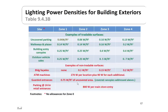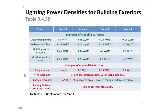The bottom half of the chart shows examples of non-tradable surfaces. ATMs are allowed 270 watts per location plus another 90 watts for each additional ATM machine. Guarded entrances are allowed 0.75 watts per square foot of uncovered areas. Parking at a 24-hour retail entrance is allowed 800 watts per main entrance. Note that in the ASHRAE manual, this list is much more extensive than what is shown here, so consult the full standard when designing.